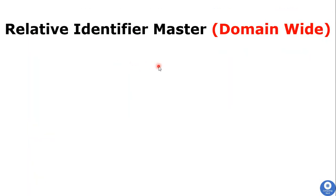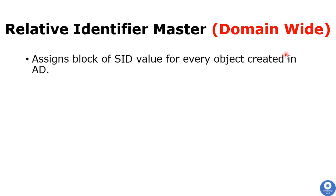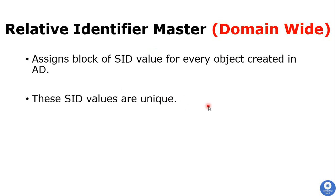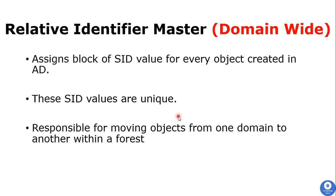Next is RID Master, also known as the Relative Identifier Master role, which is a domain-wide role. The RID Master assigns blocks of Security Identifier (SID) values to every object created in Active Directory. These SID values are unique and not repeated within the same forest. The domain controller holding this role is responsible for generating unique relative identifiers and for moving objects from one domain controller to another within the forest.